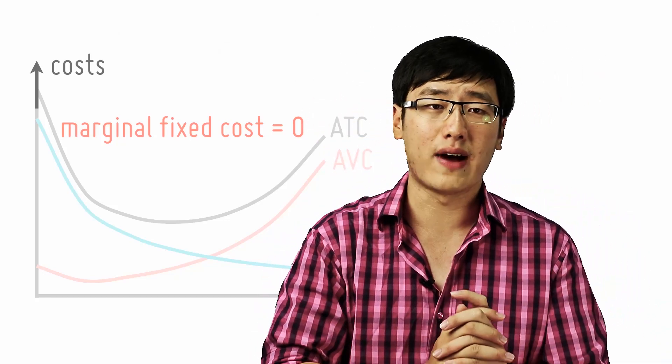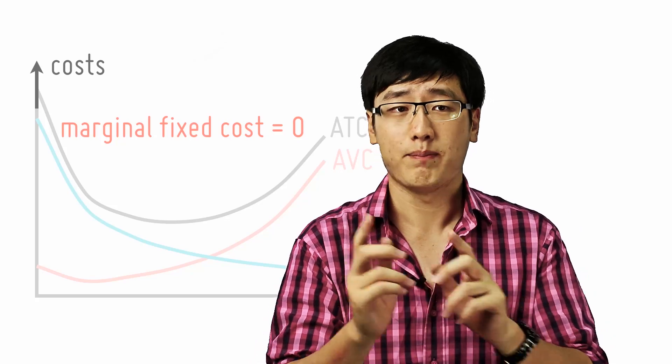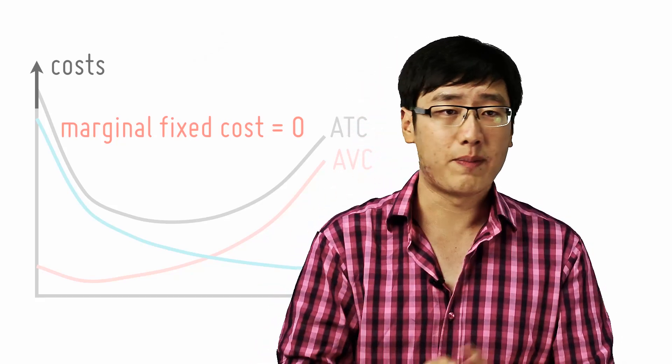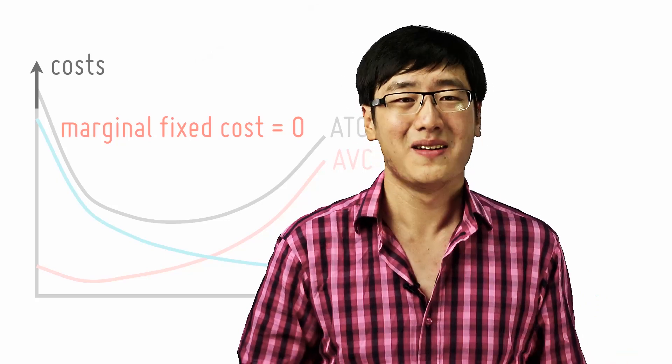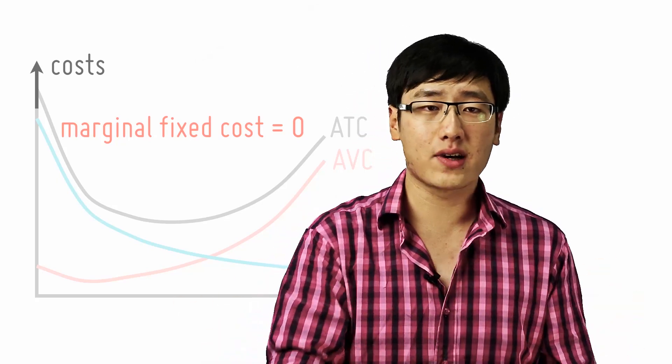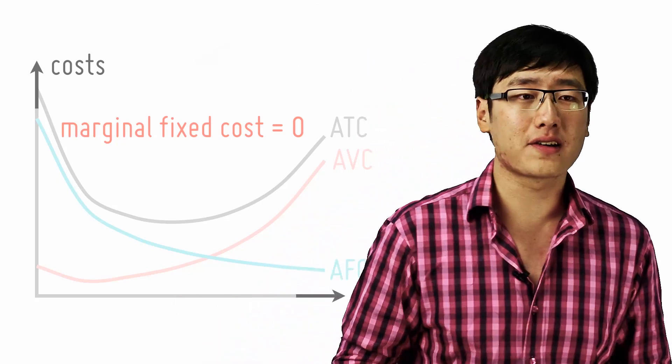To produce zero units of iPads, you just need to pay for the rental. If you want to produce one unit, you pay for the rental as well. Same rental, no additional fixed costs. Two units of iPad, same fixed costs. So what is a marginal fixed cost? Zero.